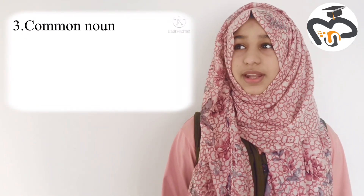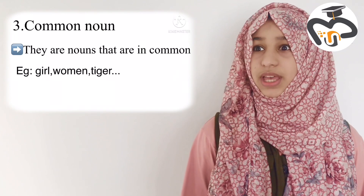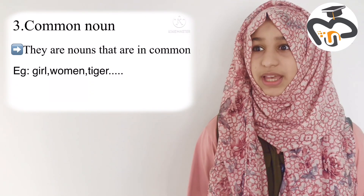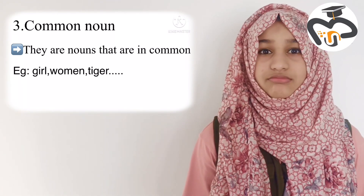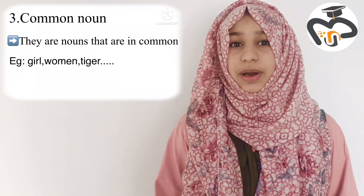Our next noun is the common noun. Well, common nouns are things that are in common — they're names of people, places, animals, or things, but they define them in general. Like we say a city, or a woman, or a dog. They're just telling what type of animal, person, or place it is, but we're not specifying. Common nouns only tell what kind of place, thing, or animal something is — but they don't specify it.